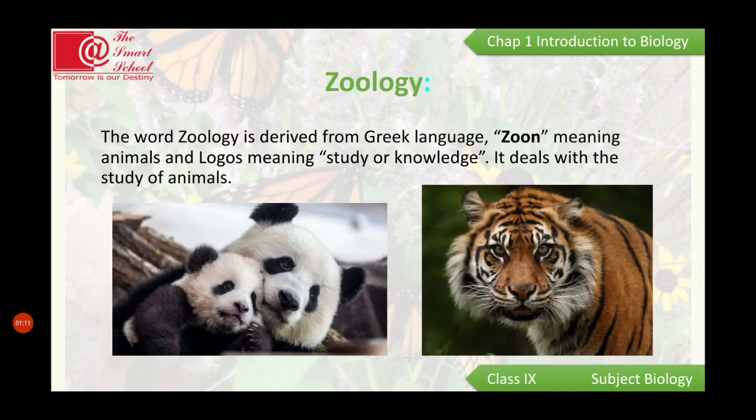Zoology. The word zoology is derived from the Greek language — zoon meaning animals and logos meaning study or knowledge. It deals with the study of animals. So we can say that zoology is the study of animals.